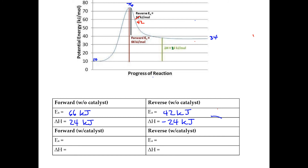Now let's suppose we had a catalyst and it lowers the peak to 50 kilojoules. The activation energy for the forward reaction with the catalyst is from 10 to 50, which is 40 kilojoules. The delta H is still from 10 to 34, so that's still positive 24 kilojoules. For the reverse with the catalyst, the activation energy goes from 34 up to 50, which is a difference of 16 kilojoules. The delta H for the reverse is still from 34 down to 10 — still negative 24 kilojoules.